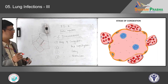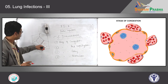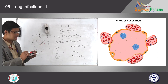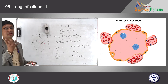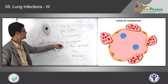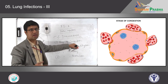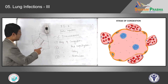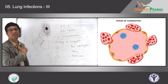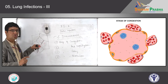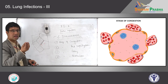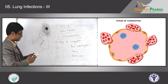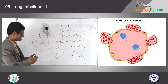This is the first stage. When you examine the lung grossly, you will see the lung becoming totally red in color — that's why we call it the stage of congestion. The affected part of the lung becomes more red in color, mainly because of congestion of the alveolar capillaries. Under microscopy, these capillaries will be enlarged in size and filled with red blood cells.